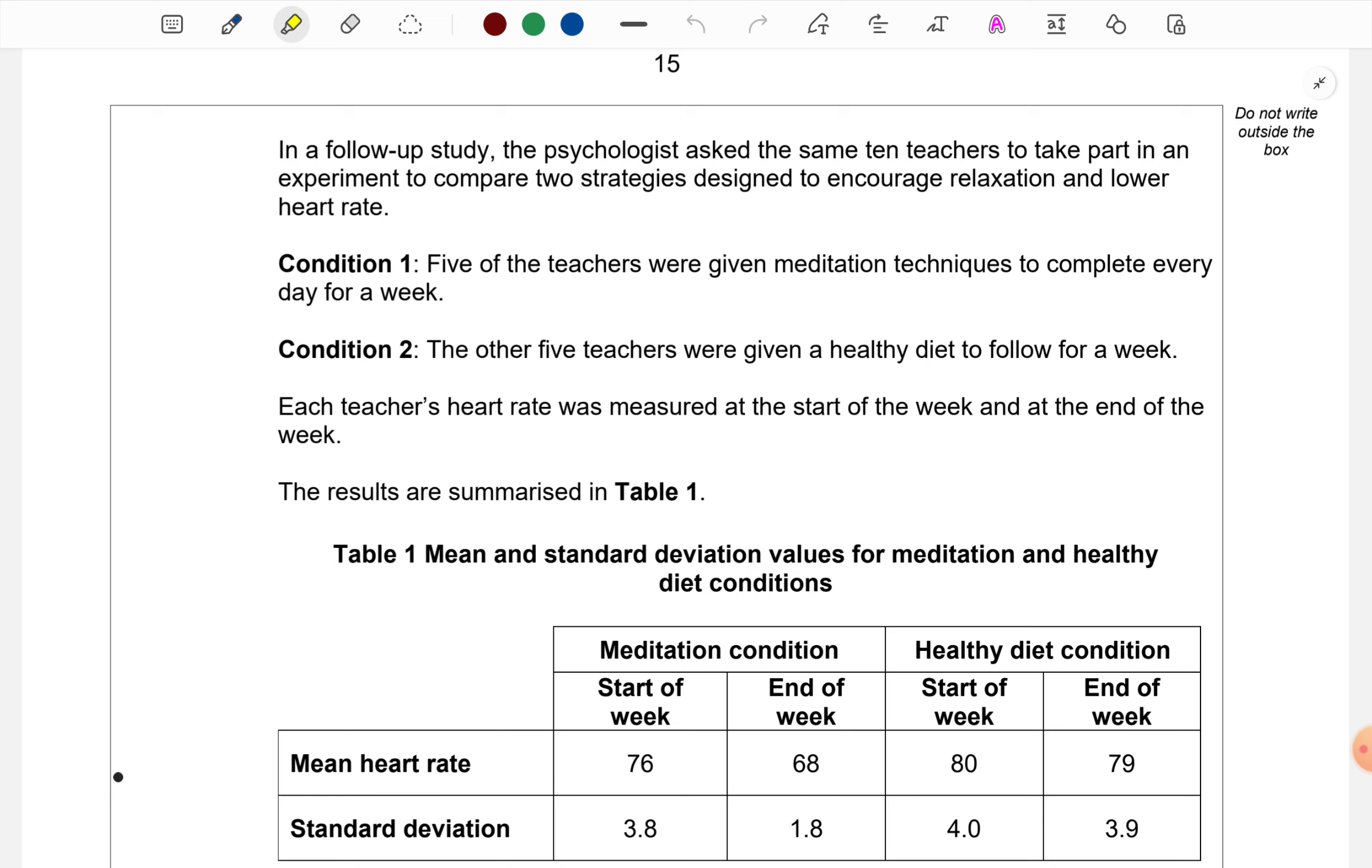In a follow-up study, the psychologist asked the same 10 teachers to take part in an experiment to compare two strategies designed to encourage relaxation and lower heart rate. In condition 1, five of the teachers were given meditation techniques to complete every day for a week. In condition 2, the other five teachers were given a healthy diet to follow for a week. Each teacher's heart rate was measured at the start of the week and at the end of the week. The results are summarized in the table.